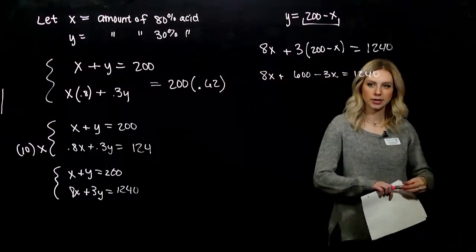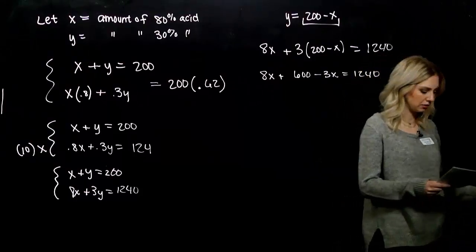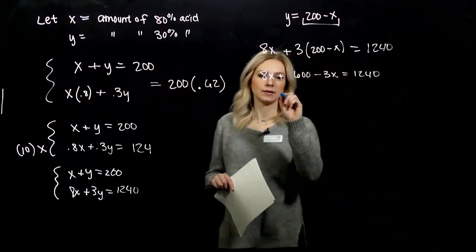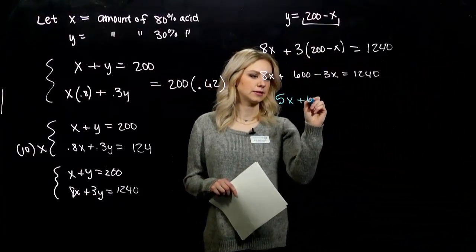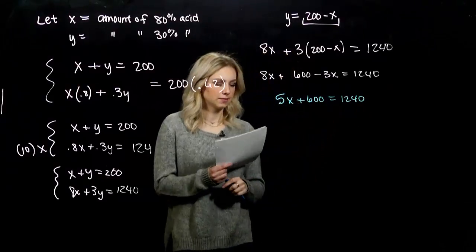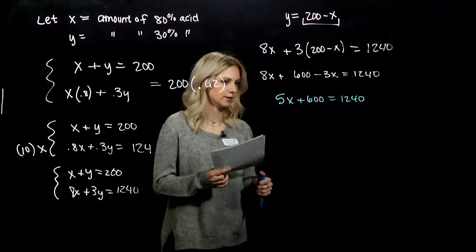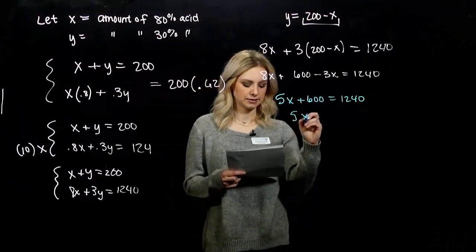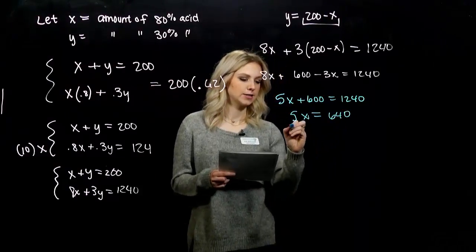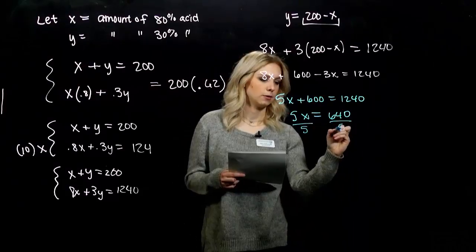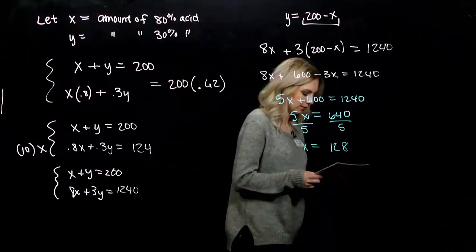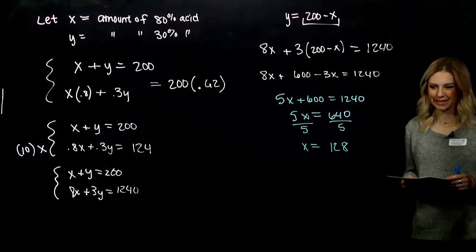Let's solve for x. Now it's an equation in one variable. We're looking at 8x plus 600 minus 3x equals 1240. Combine like terms: 5x plus 600 equals 1240. Subtract 600 from both sides: 5x equals 640. Divide by 5, x equals 128.